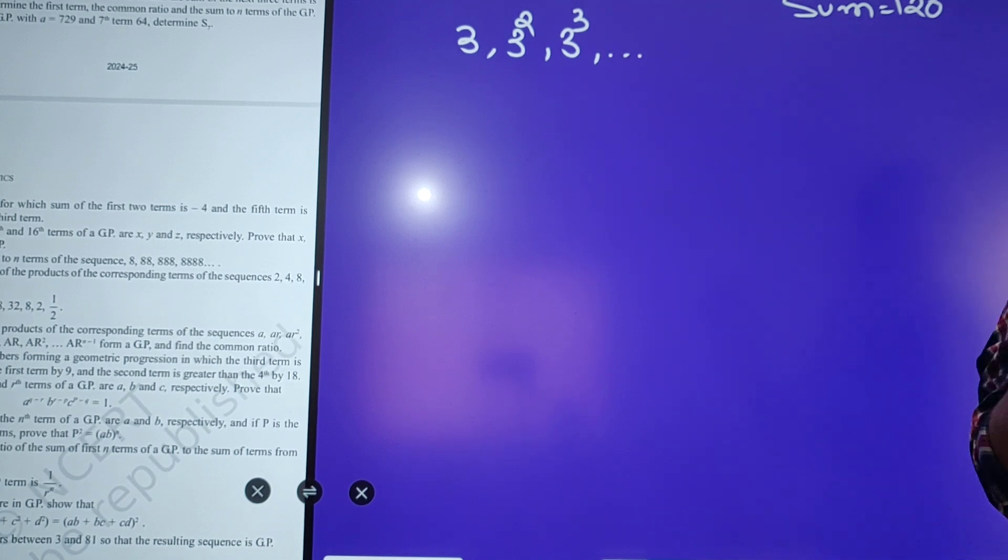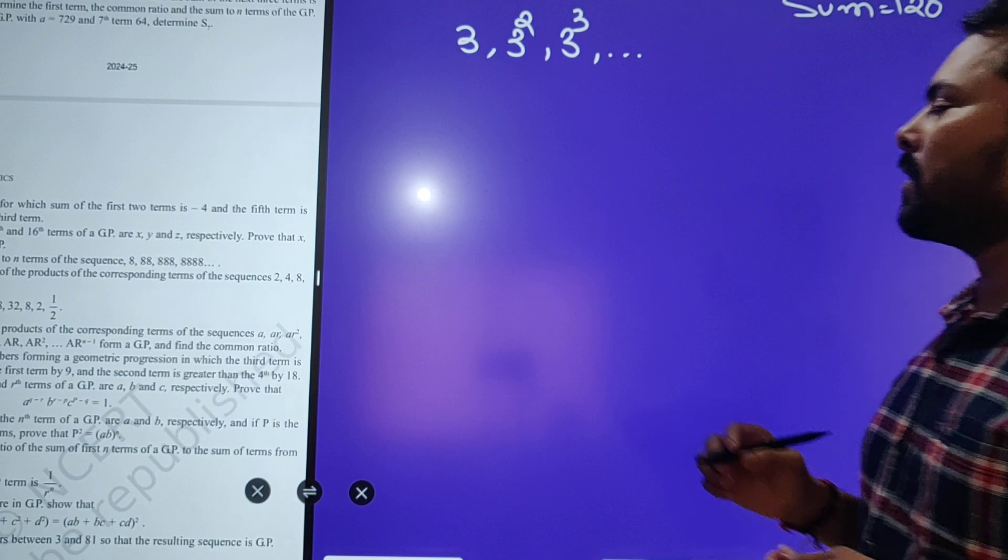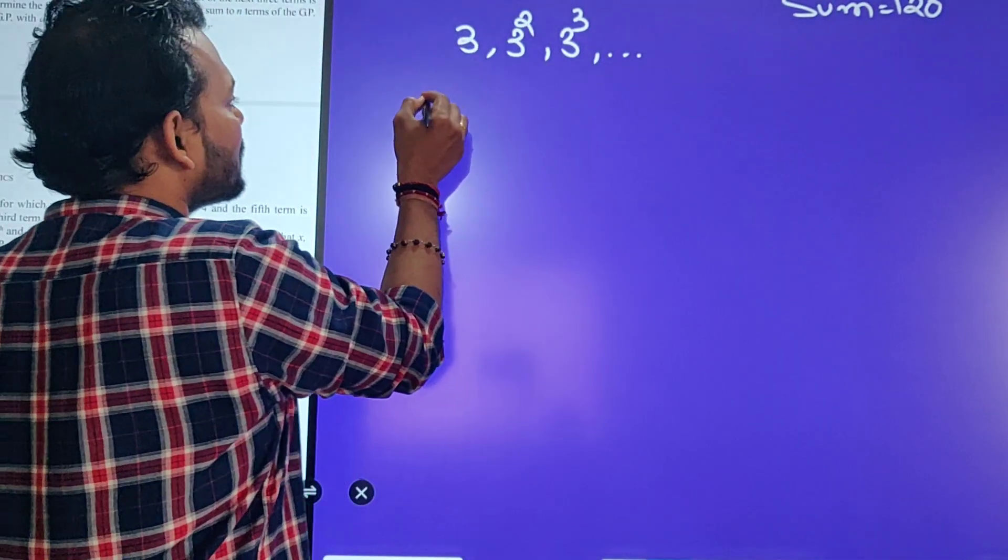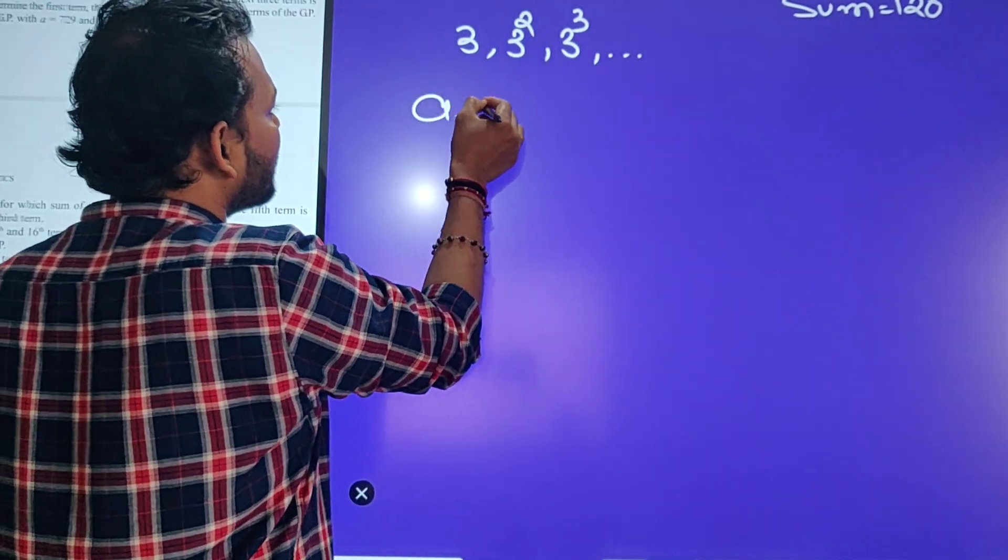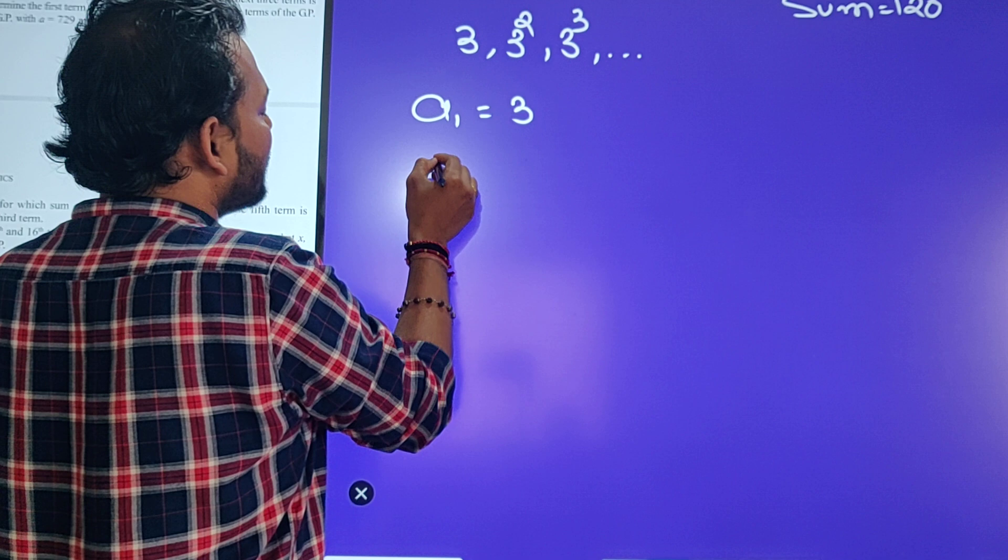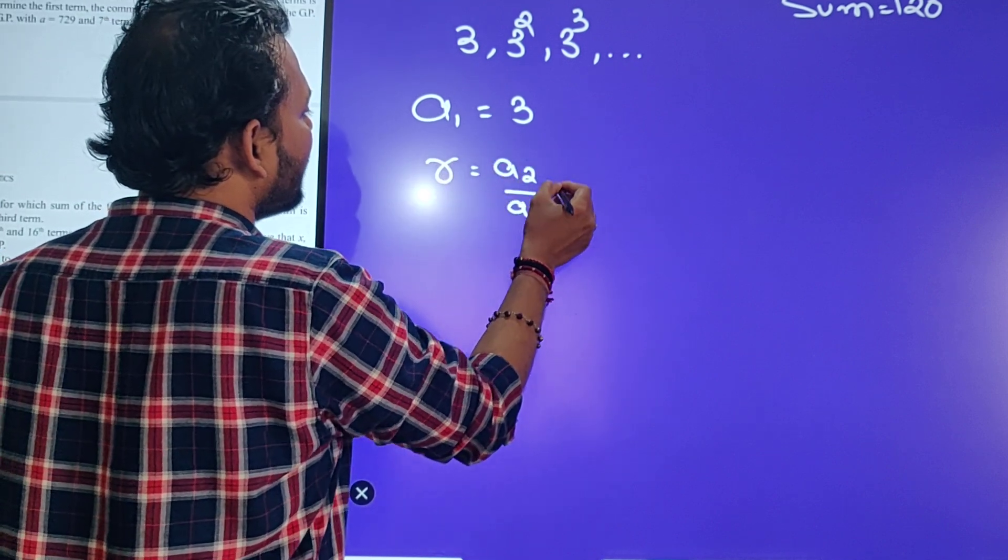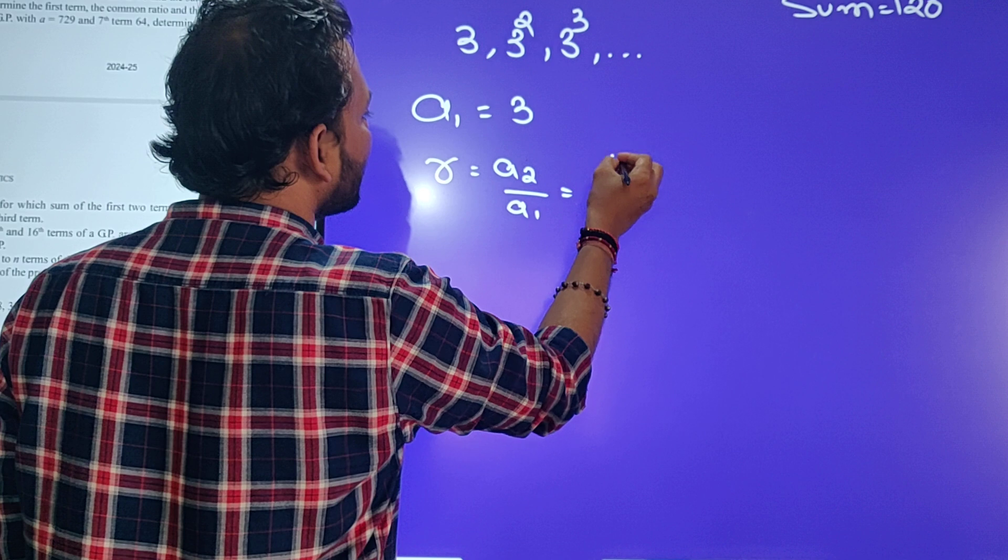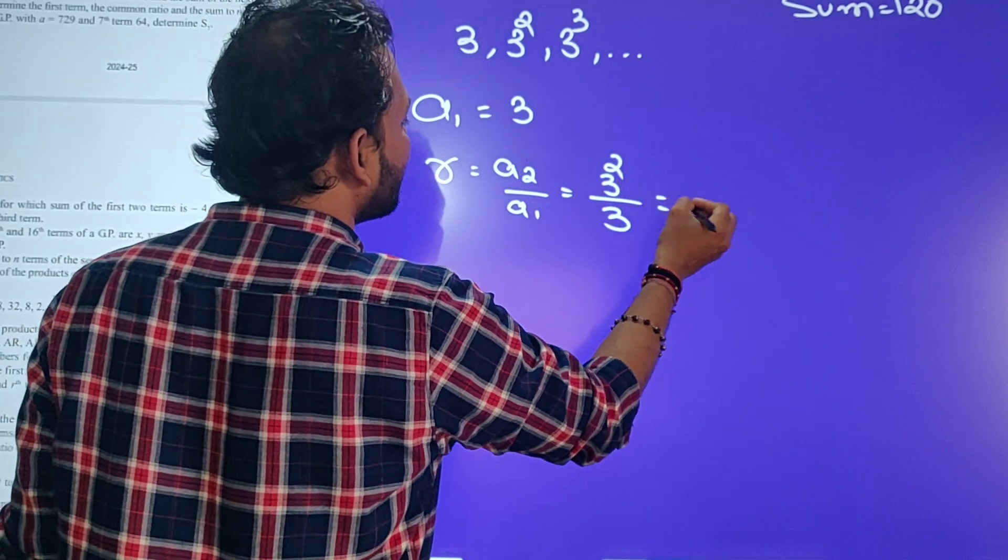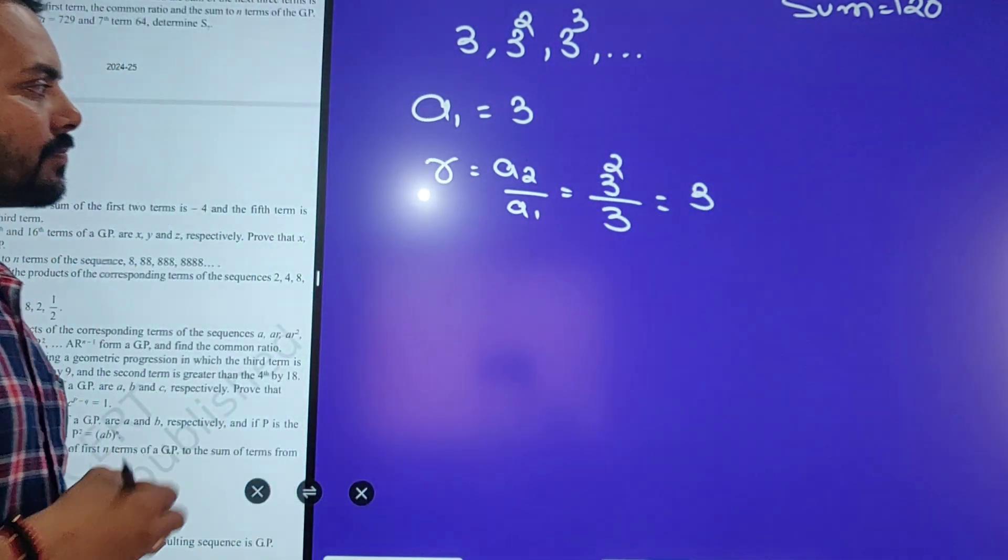So that sum kitna ho jayega? 120. This question is, what we have shown here is that a1 is 3. Then r is equal to a2 by a1. That is equal to 3 square divided by 3. That is equal to 3. Done?